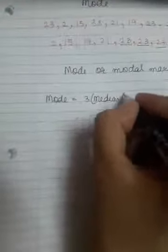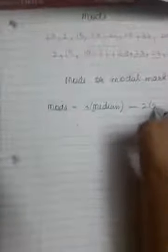Now we can find mode with the help of one empirical formula, that is 3 into median, whatever the median is, multiply by 3 minus 2 into mean.